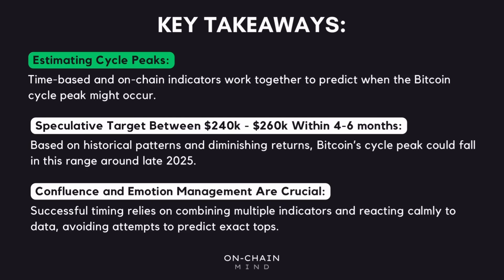To wrap things up, the key to understanding Bitcoin's cycle peaks lies in combining both time-based and on-chain indicators. Tools like the extrapolators, logarithmic growth bands, and cycle top lines give us a more complete picture of when the cycle might reach its peak. It's this blend of different data points that helps us move beyond guesswork and make smarter decisions. But while these models suggest a speculative target of between $240,000 to $260,000 could be reached within the next four to six months if we enter a parabolic phase, it's important to remember these are just wild estimates. The market doesn't follow a strict script — timing and price structure will always shift.